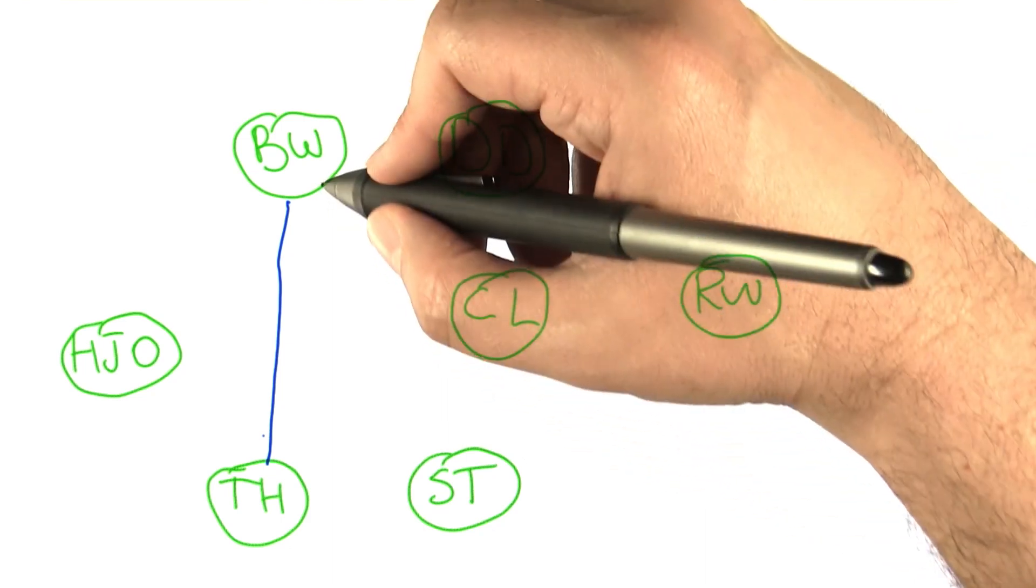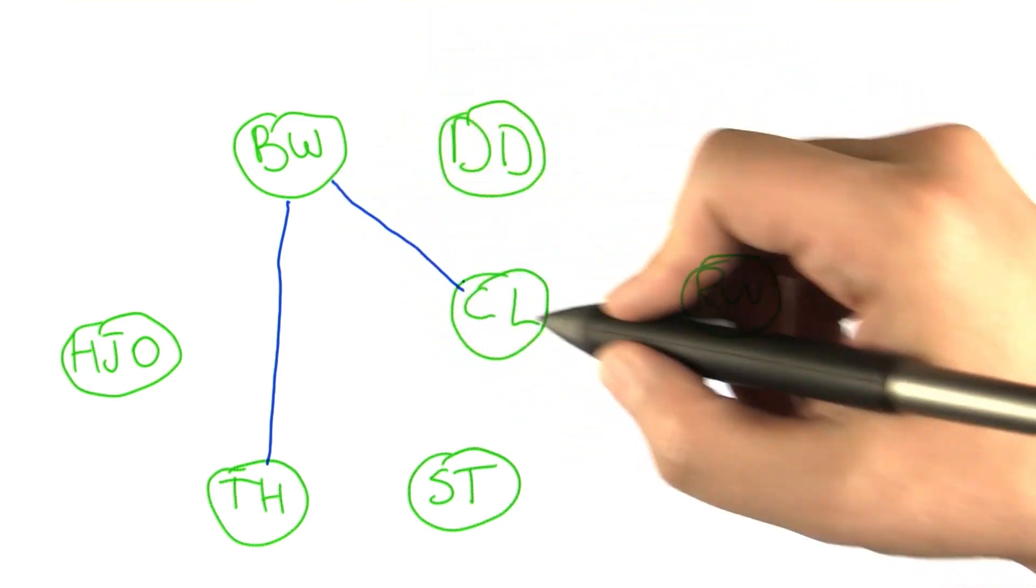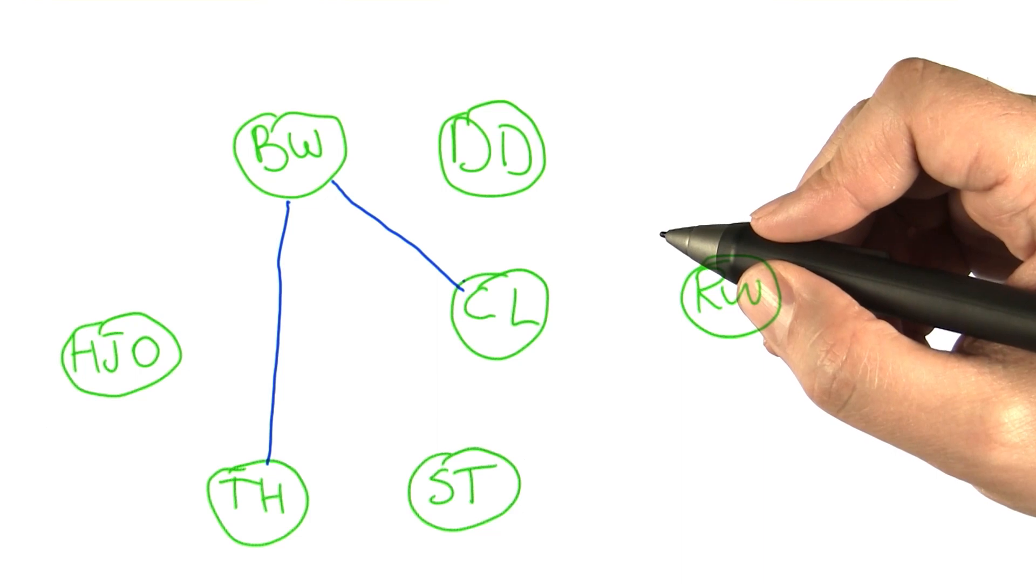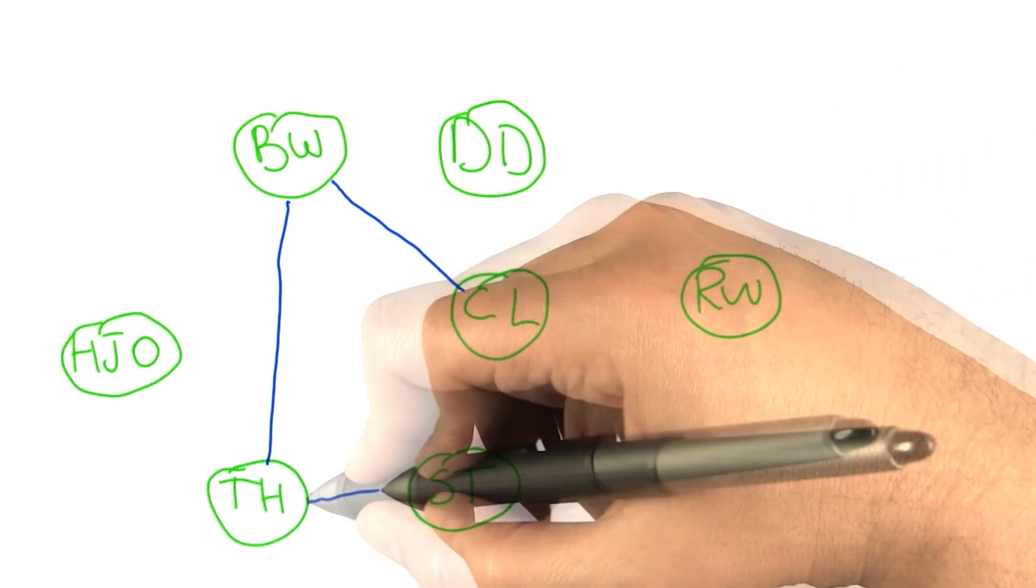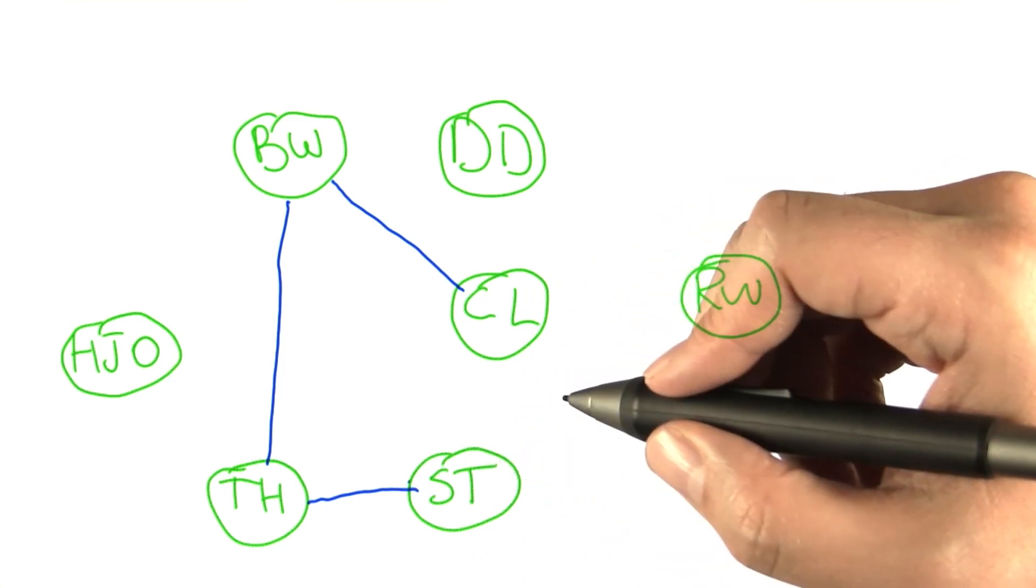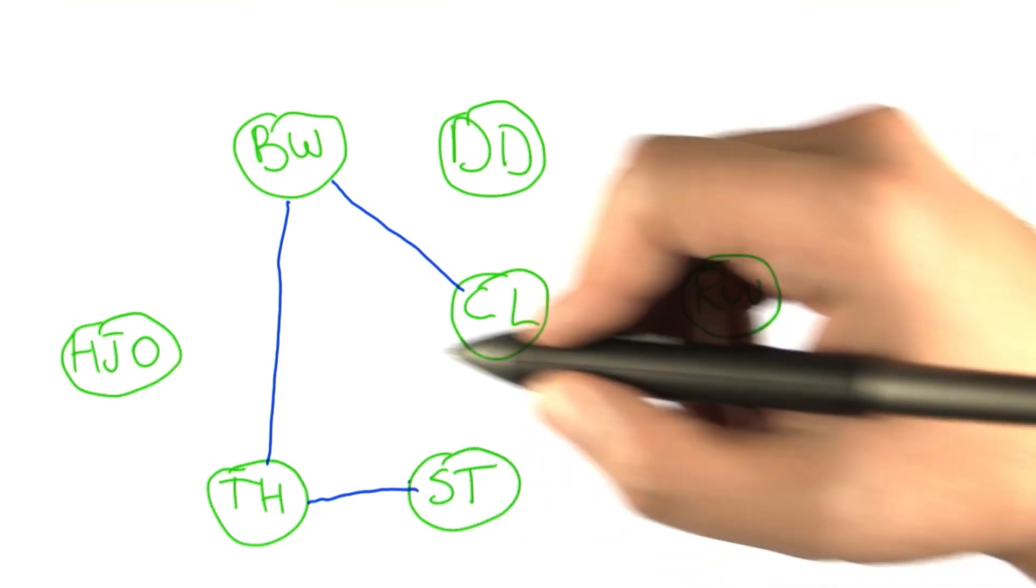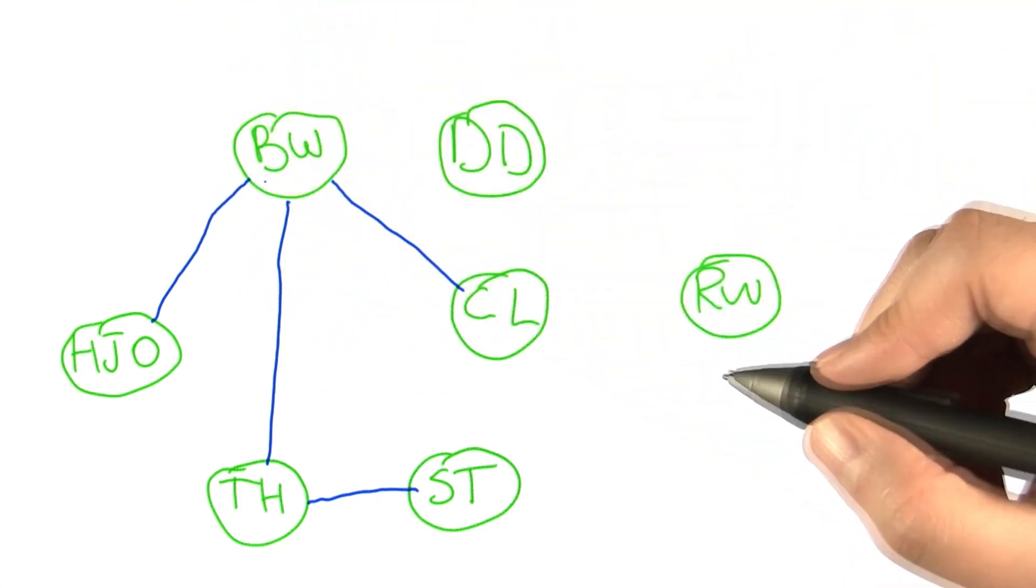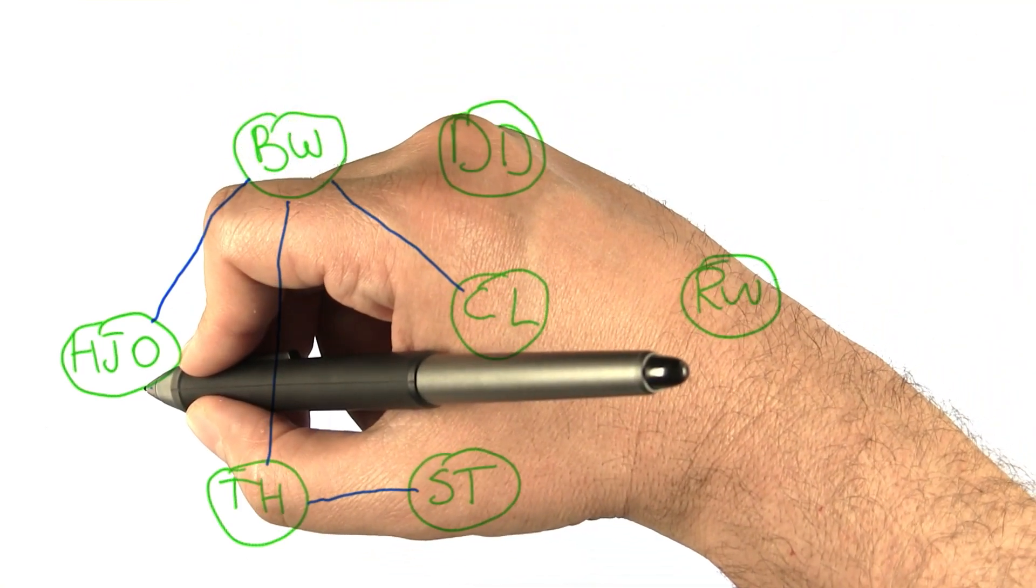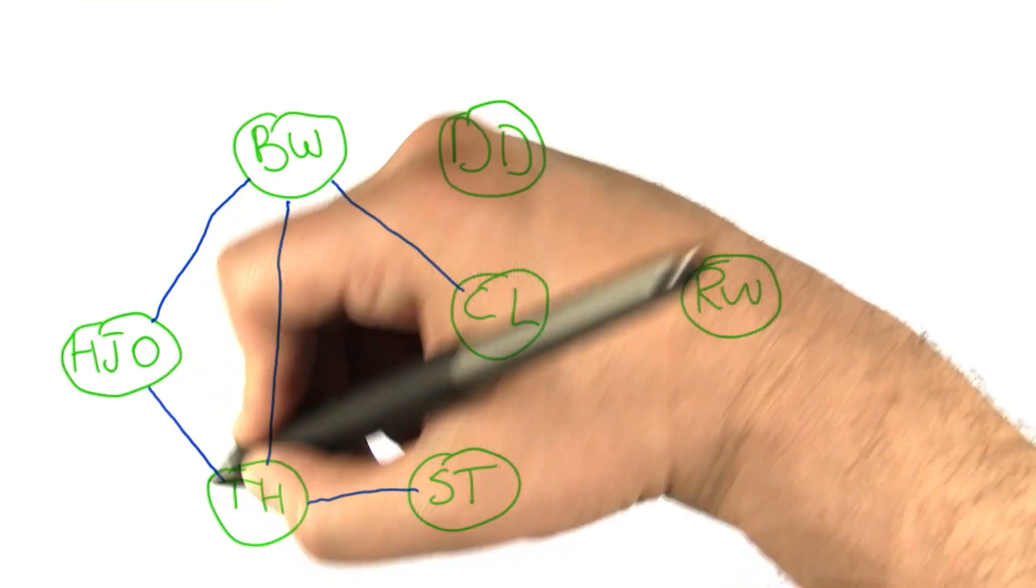Bruce Willis and Cloris Leachman were in a movie together called Beavis and Butthead Do America. Also not a very popular movie. Tom Hanks and Stanley Tucci were in a movie called The Terminal. Haley Joel Osment and Bruce Willis were in The Sixth Sense. They were the stars of that movie. I will not tell you the ending. But Haley Joel Osment was also in Forrest Gump with Tom Hanks.